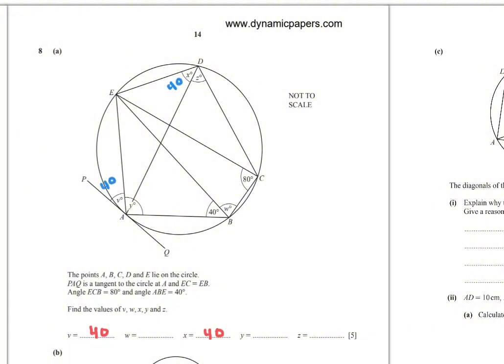Now to find W. It is given to you that EC equals EB, so we have an isosceles triangle. So angle W equals 80. Because side equals side, so angle equals angle. So W equals 80.